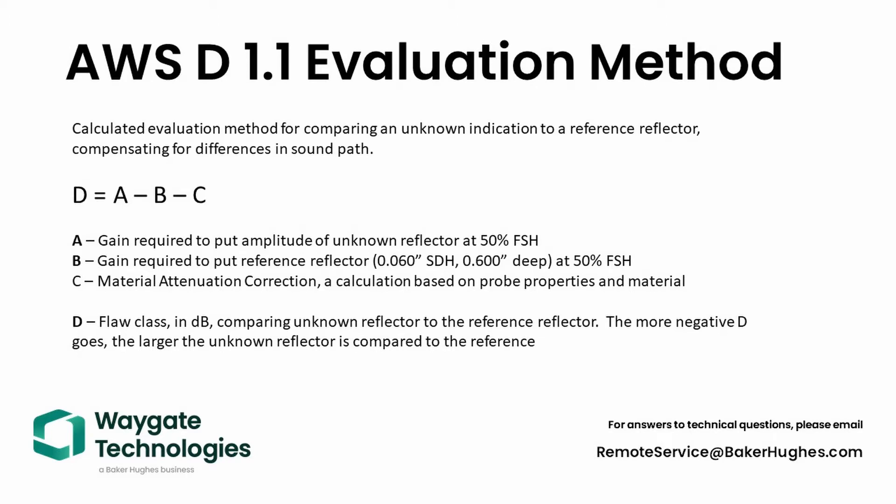C is our sound attenuation factor, partially modeled on the probe, partially on the attenuation of material, beam spread and so on. As the indication goes deeper into the part, the sound path from the probe to the indication is longer. We factor in additional gain to make up for the loss of sound over the distance involved. C is calculated as 0.079 dB per millimeter of the measured sound path to our gate minus 25.4 millimeters.